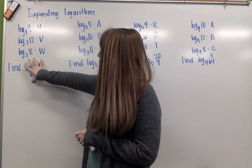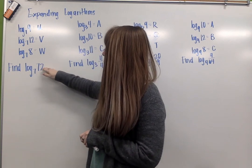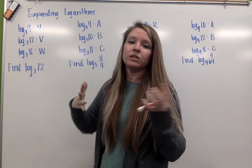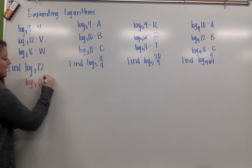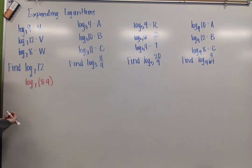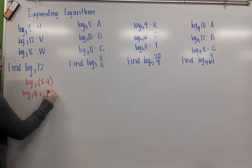So I'm going to rewrite log base 7 of 72 in terms of u, v, and w. With this one, I know that 72 is the same as 8 times 9. So 8 times 9 is 72, and since I'm multiplying, I can expand my log using addition.